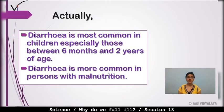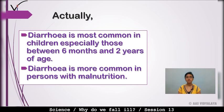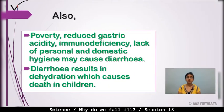Diarrhea is most common in children, especially those between 6 months and 2 years of age. It is more common in persons with malnutrition. Also, poverty, reduced gastric acidity, immunodeficiency, and lack of personal and domestic hygiene may cause diarrhea.